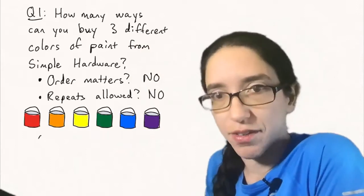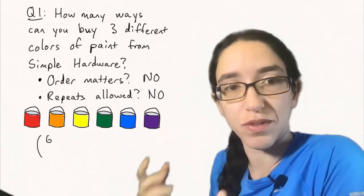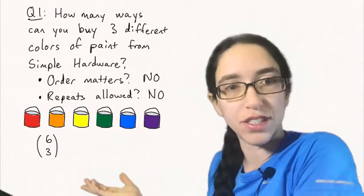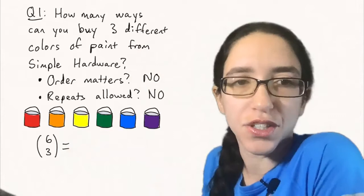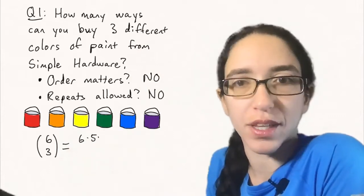We've seen this kind of question before. This is exactly what n choose k means. We've seen binomial coefficients and this is an example where in this case we have 6 choose 3. And so we can compute this using our formula that we had in chapter one.